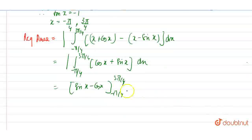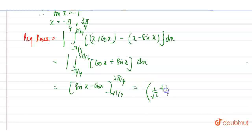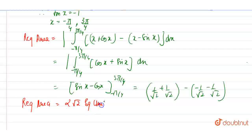Which is equal to minus 1 by root 2 plus 1 by root 2 minus of minus 1 by root 2 minus 1 by root 2. So our required area is equal to 2 root 2 square unit. This is our final answer, 2 root 2 square unit.